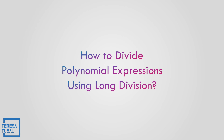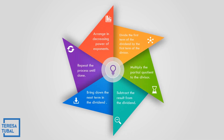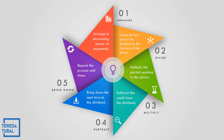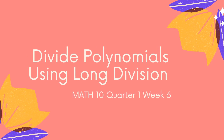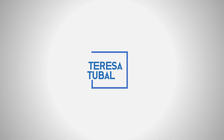Let us recall how to divide polynomial expressions using long division. The steps to remember: first, arrange from highest exponent to lowest exponent; second, divide; third, multiply; fourth, subtract; fifth, bring down; and sixth, repeat the process from step one to step five. I hope you learned about dividing polynomials using long division. Enjoy learning mathematics. I'm Teresa Tuval. Thank you so much.